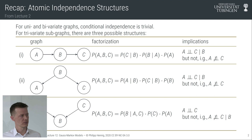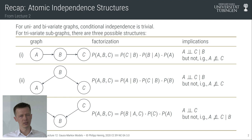We encountered three different atomic structures in such graphical models — atomic in the sense that they arise in trivariate graphs, the first sort of non-trivial joint distribution. Since then we haven't talked much about this modeling language, which will become more prominent in the rest of the course. So let's see if we can make a connection to what we've done so far.